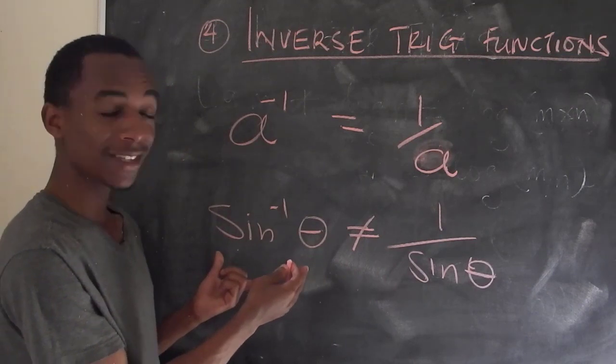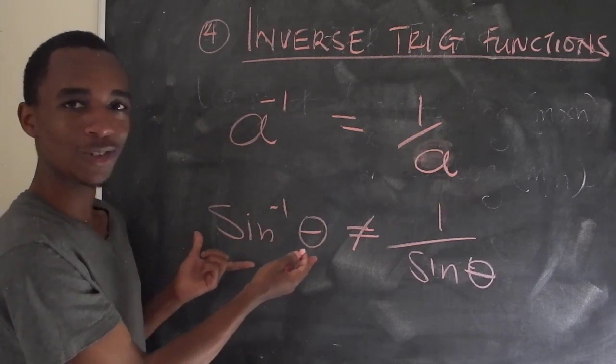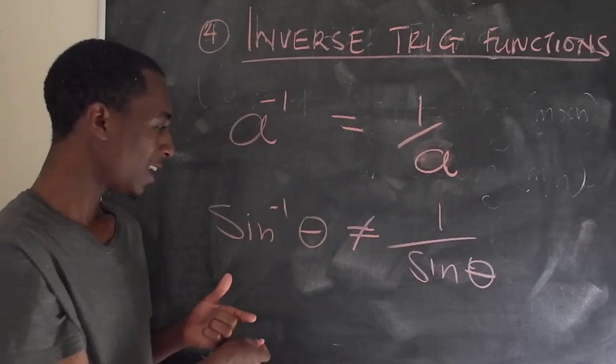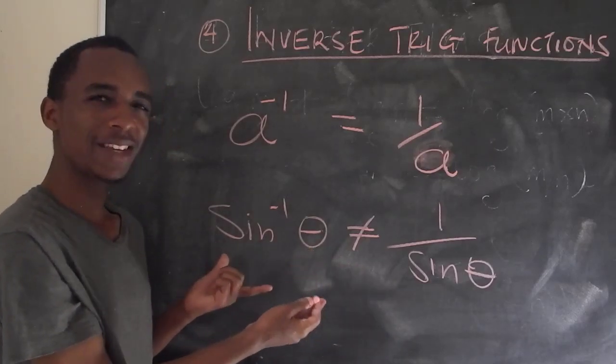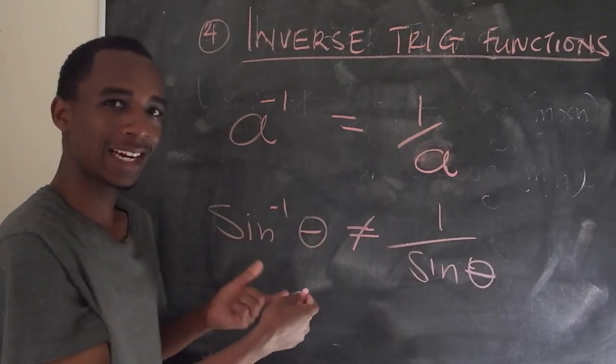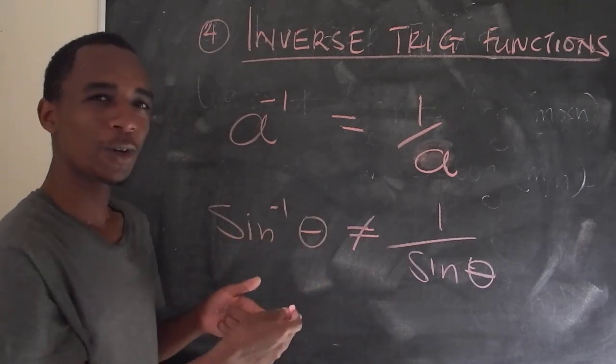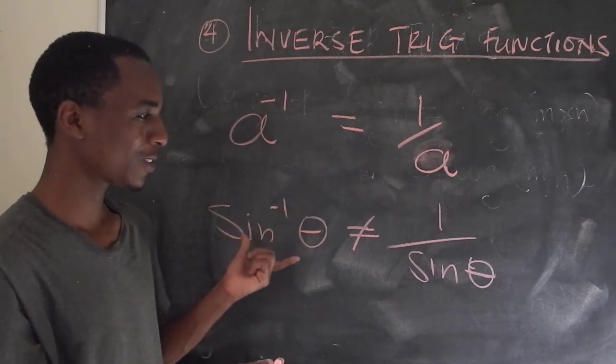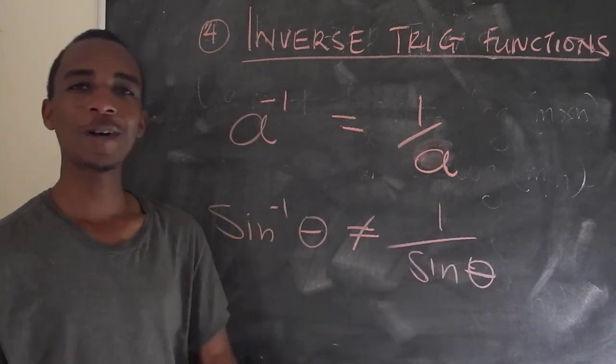Now this negative one here, it turns out that it's not the same meaning with this negative one here. This is a notation for the inverse trigonometric functions, the arcsine of theta. Actually, I think one of the reasons why we confuse this is when we actually call it sine inverse. I believe this should be correctly called the arcsine or sine arc, depending on what your teacher likes to call it, but not an inverse. Or if we use the word inverse, then it should be made clear that we mean an inverse function, not an inverse in terms of a reciprocal. All right, let's move on to number five.